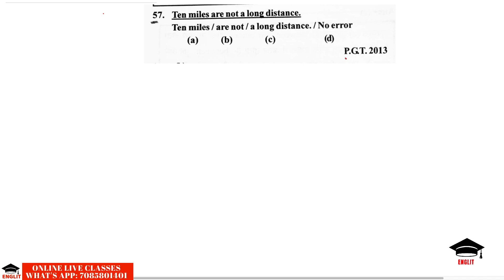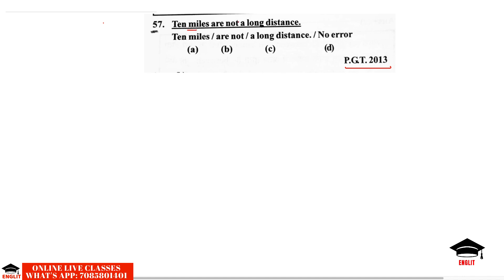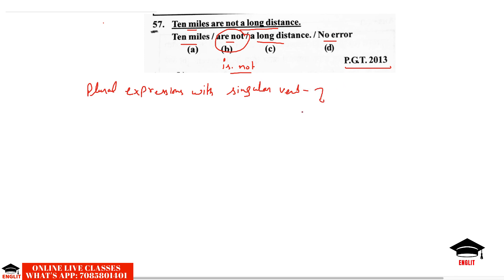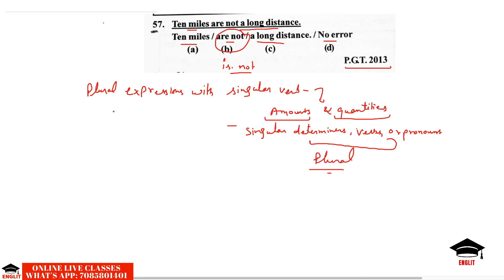The first question was asked in PGT 2013: identify the error in '10 miles are not a long distance.' The error lies in option B — 'are not.' The correct answer is '10 miles is not a long distance.' There are certain plural expressions that take singular verbs, specifically amounts and quantities. When we talk about amounts or quantities, we always use singular determiners, verbs, or pronouns even though the noun is plural. Here, 10 miles denotes a distance, which is singular, so it takes the singular verb 'is' rather than 'are.'